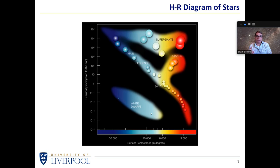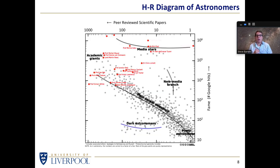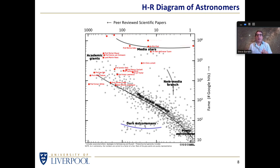Well if astronomers do that with stars, somebody asked the question why don't we do that with astronomers? Why don't we take astronomers and plot them on luminosity? Let's replace luminosity with fame of the astronomer. The quickest way of quantifying how famous somebody is, is put their name into Google and see how many hits you get. So the vertical scale is the number of Google hits for an individual, and the horizontal scale - just like temperature ran from right to left in a Hertzsprung-Russell diagram - is the number of peer-reviewed scientific papers this individual has published.